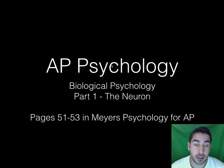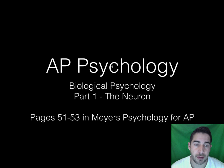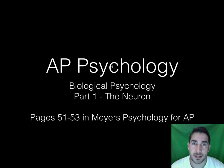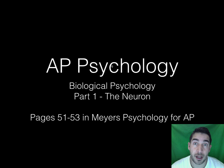Hi, this is the first lecture in the Biological Psychology section, or unit, of AP Psychology. We're going to start really small — we're going to look at the little pieces of a neuron and then grow bigger and bigger. We'll first start with talking about the neuron in these first few parts, then move on to talk about the brain and then the body as a whole.